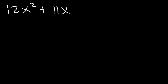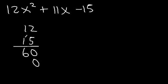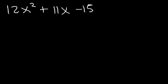For more practice, let's factor 12x squared plus 11x minus 15. We're dealing with bigger numbers so it might take a little longer, but we can still do it. First, let's multiply the leading coefficient by the constant term: 12 times negative 15. Multiplying by hand: 15 times 12 is 180, so 12 times negative 15 is negative 180.